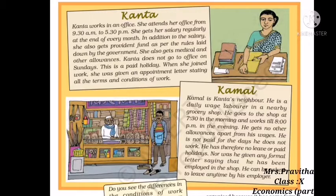When she joined work, she was given an appointment letter stating all the terms and conditions of work. Now we will discuss about Kamal. Kamal is Kanta's neighbor. He is a daily wage laborer in a nearby grocery shop. He goes to the shop at 7:30 in the morning and works till 8 PM in the evening. He gets no other allowances apart from his wages. He is not paid for the days he does not work — he has no leave or paid holidays. Nor was he given any formal letter saying he has been employed in the shop. He can be asked to leave any time by his employer.